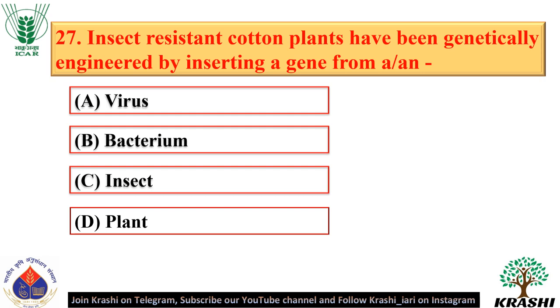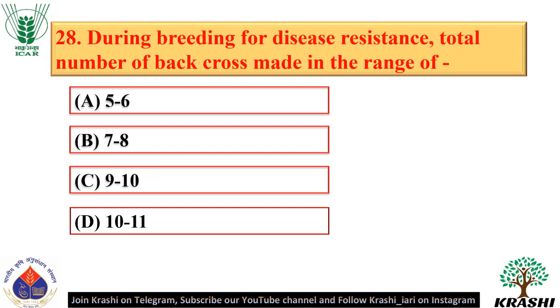Question number 27. Insect-resistant cotton plants have been genetically engineered by inserting a gene from the bacterium Bacillus thuringiensis — option B.